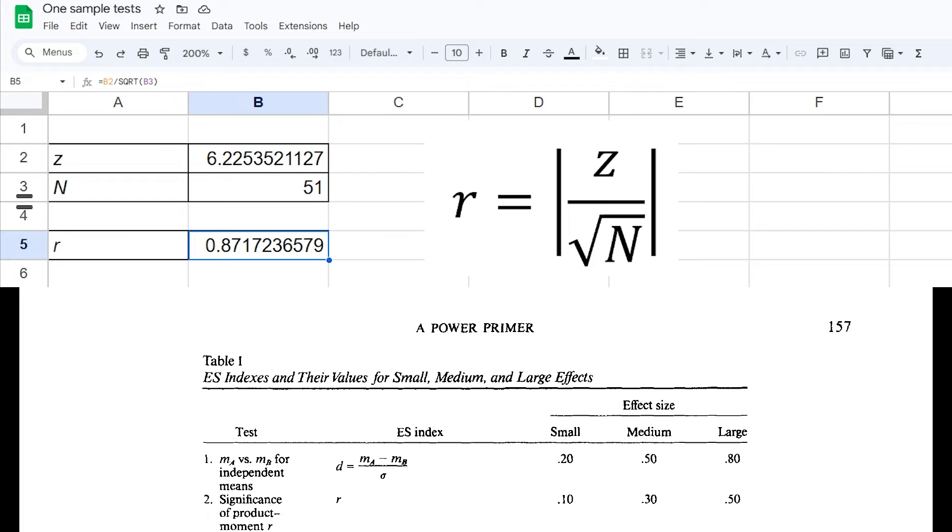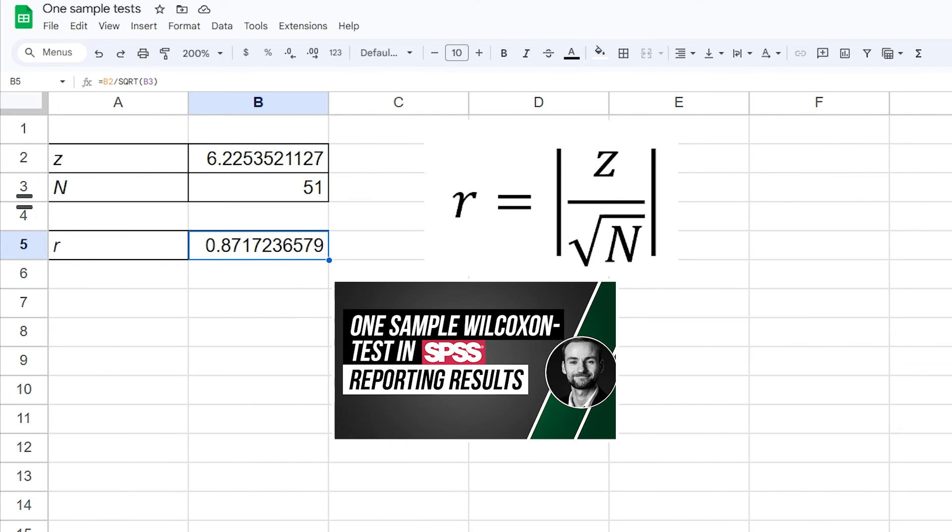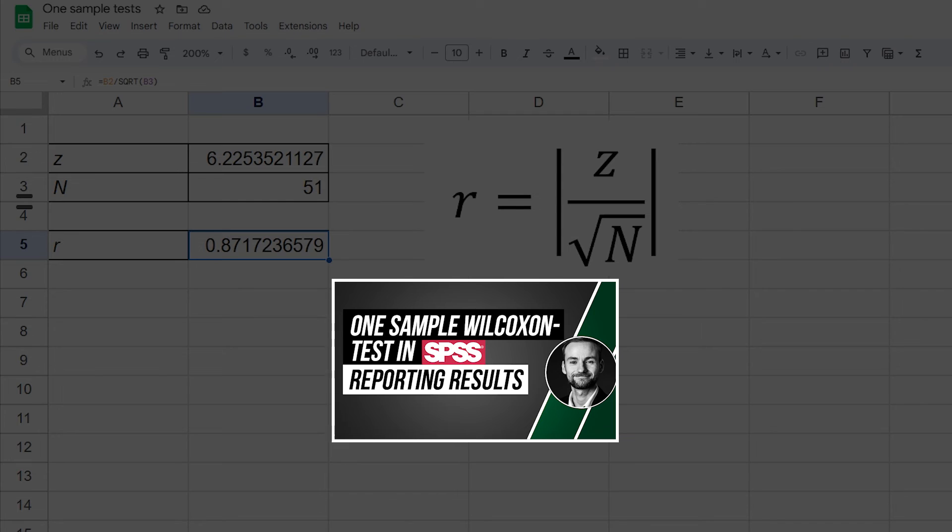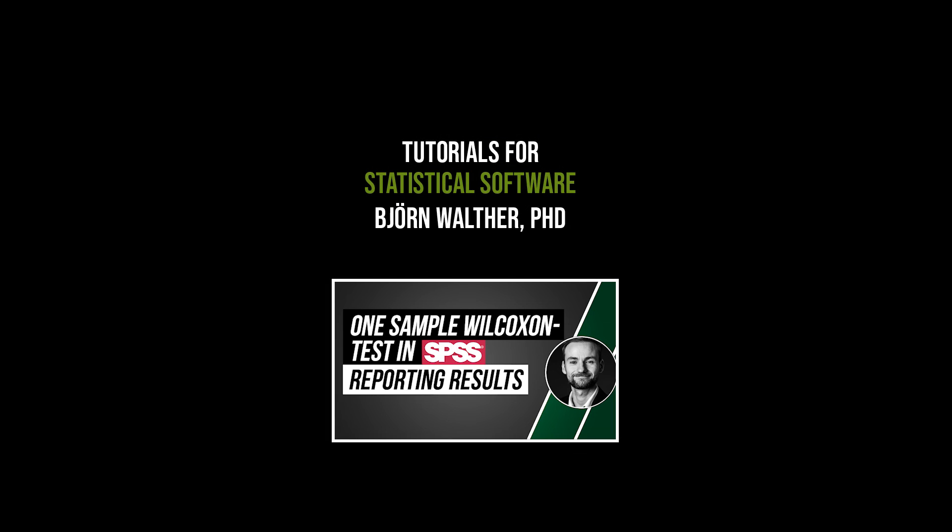In my example, 0.872 is well above the threshold for a large effect if I use Cohen's thresholds. When you're done, you have to write up the results. The video that appears now will show you how.